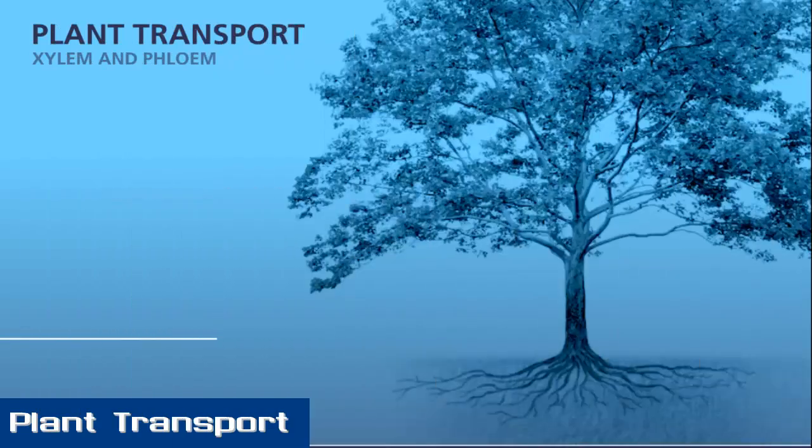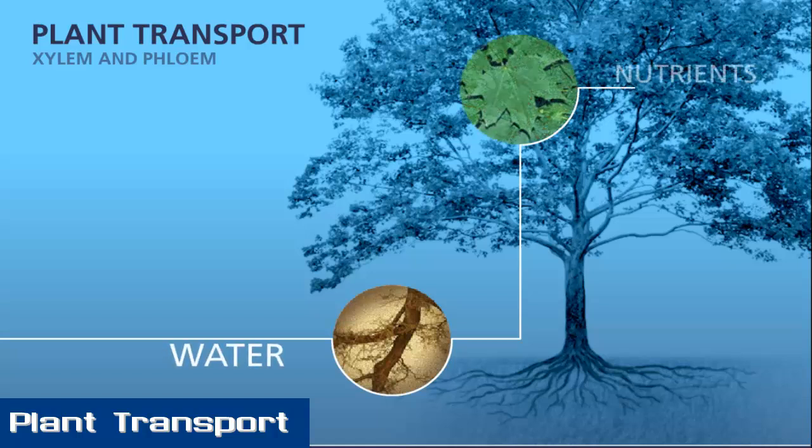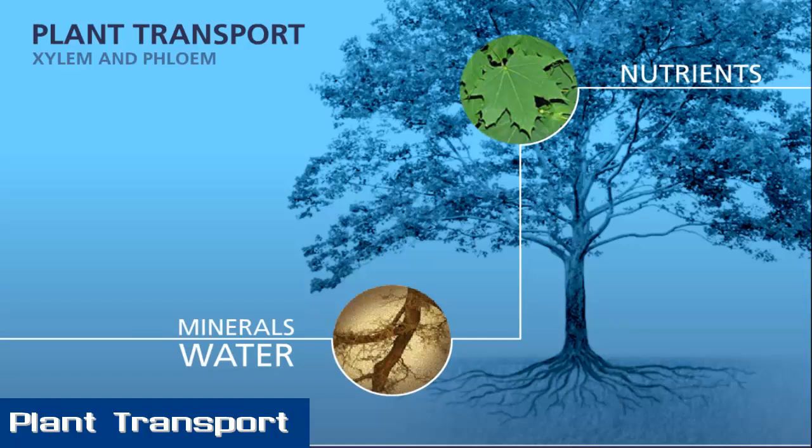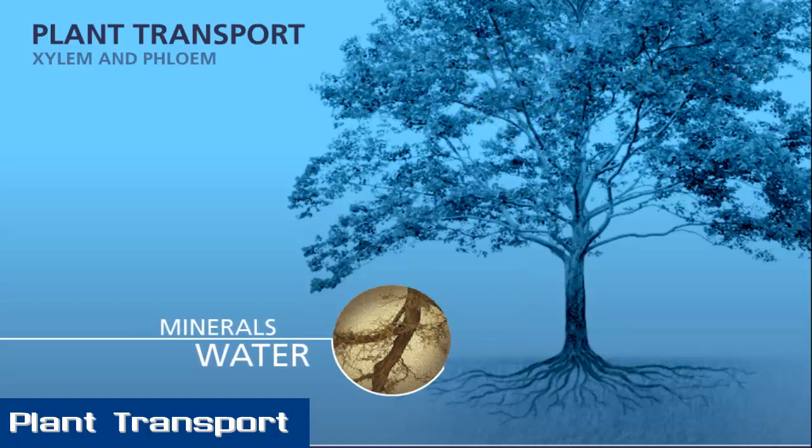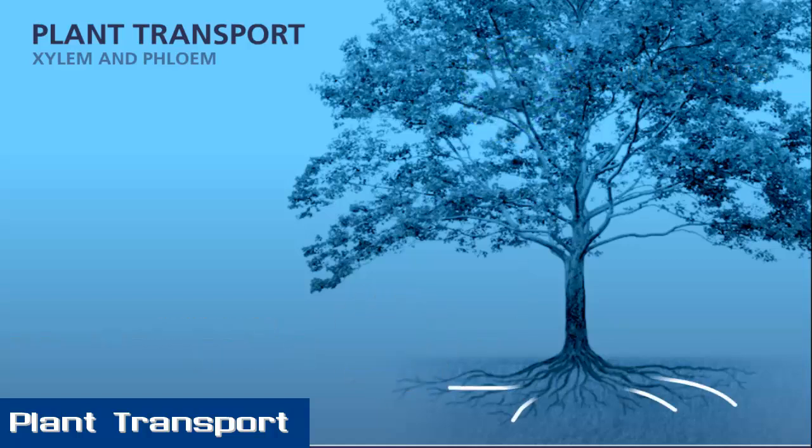In order for a tree to carry out photosynthesis and maintain its overall health, water and nutrients need to move throughout the entire tree, even against gravity. How does a plant manage this without an organ like a heart that pumps fluids? As we will see, water is pulled from the roots to the leaves through a process called transpiration.